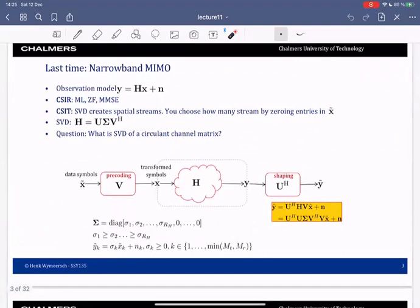Last time you learned about the narrowband MIMO channel. The model is always the same: Y = Hx + n. When the receiver only has channel state information we saw different detectors: maximum likelihood, zero forcing, and minimum mean square error.